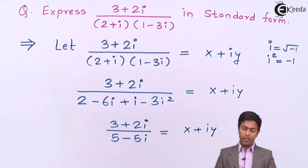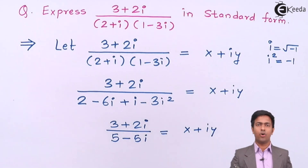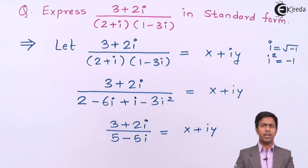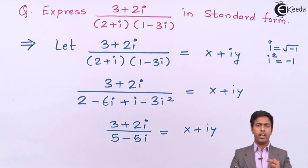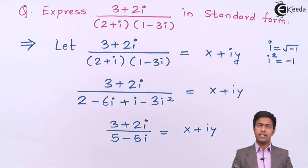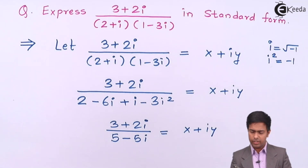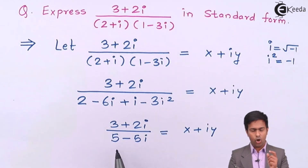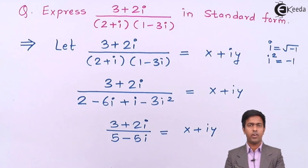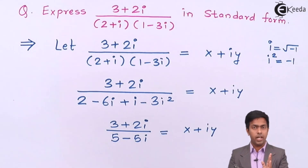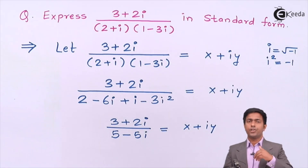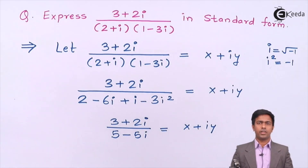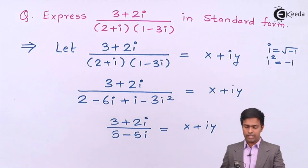Now we have a single complex number in the denominator. To remove it, we multiply and divide by the conjugate. The conjugate of 5 minus 5i is 5 plus 5i. So now I will multiply both the numerator and the denominator by 5 plus 5i.